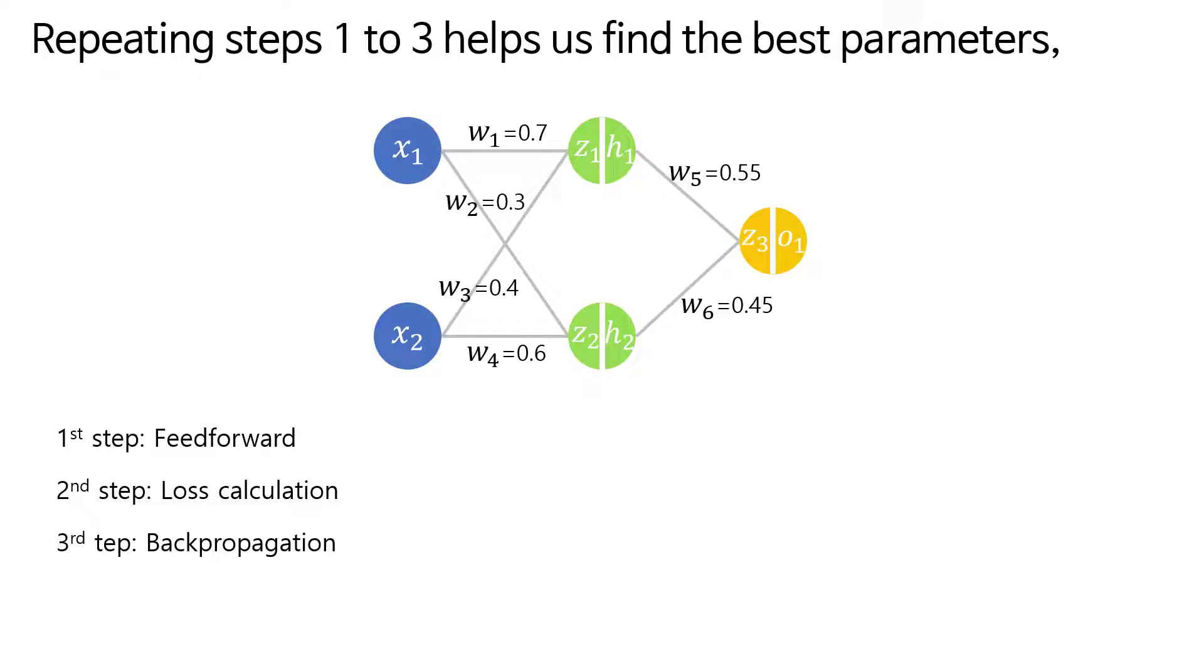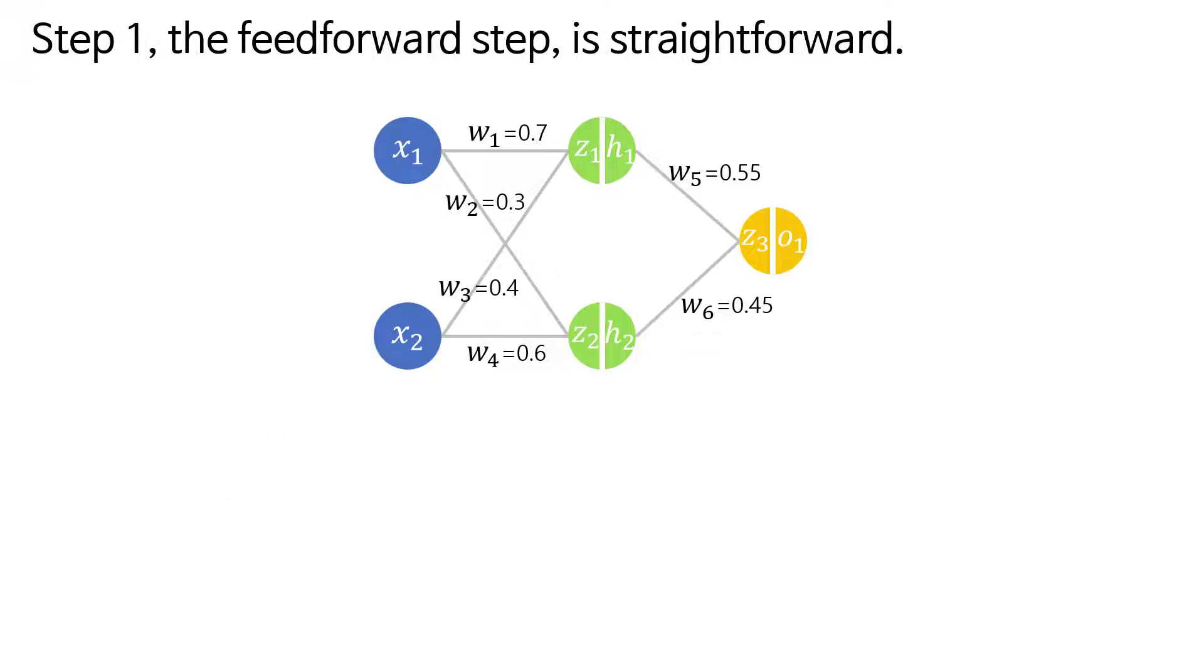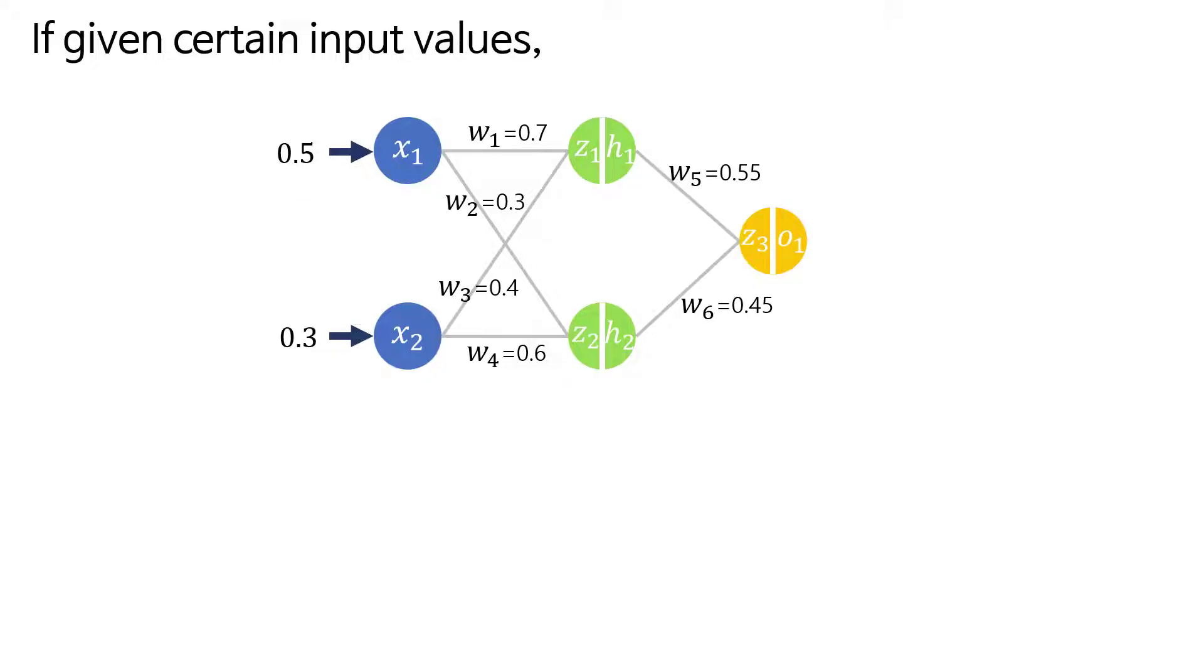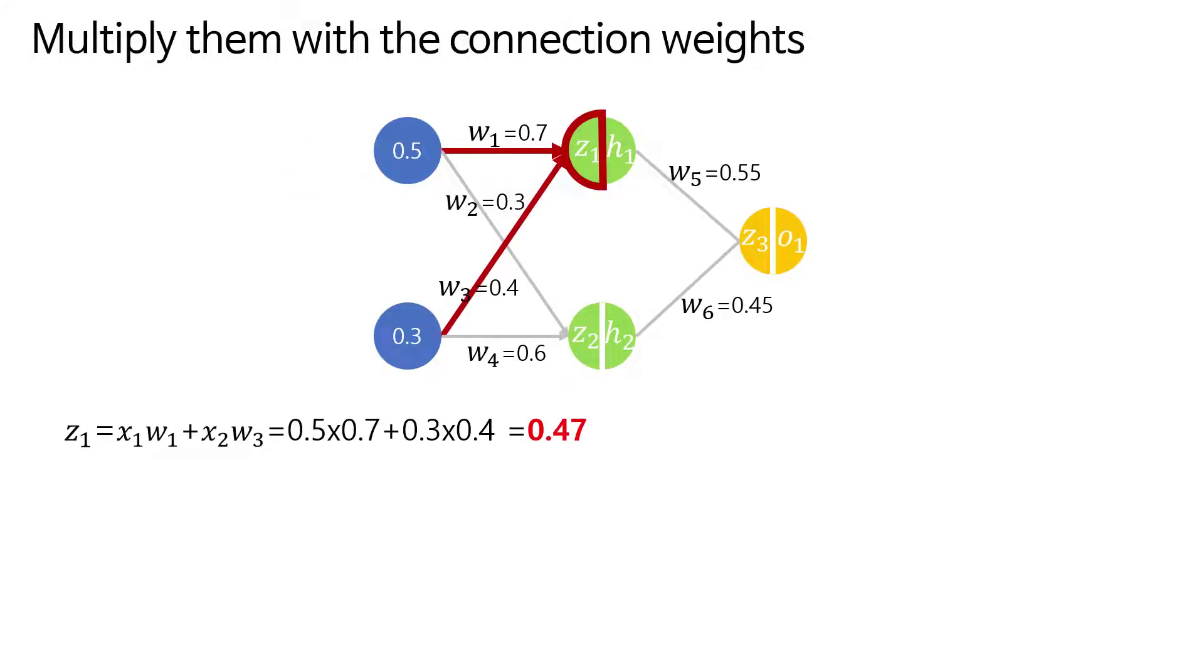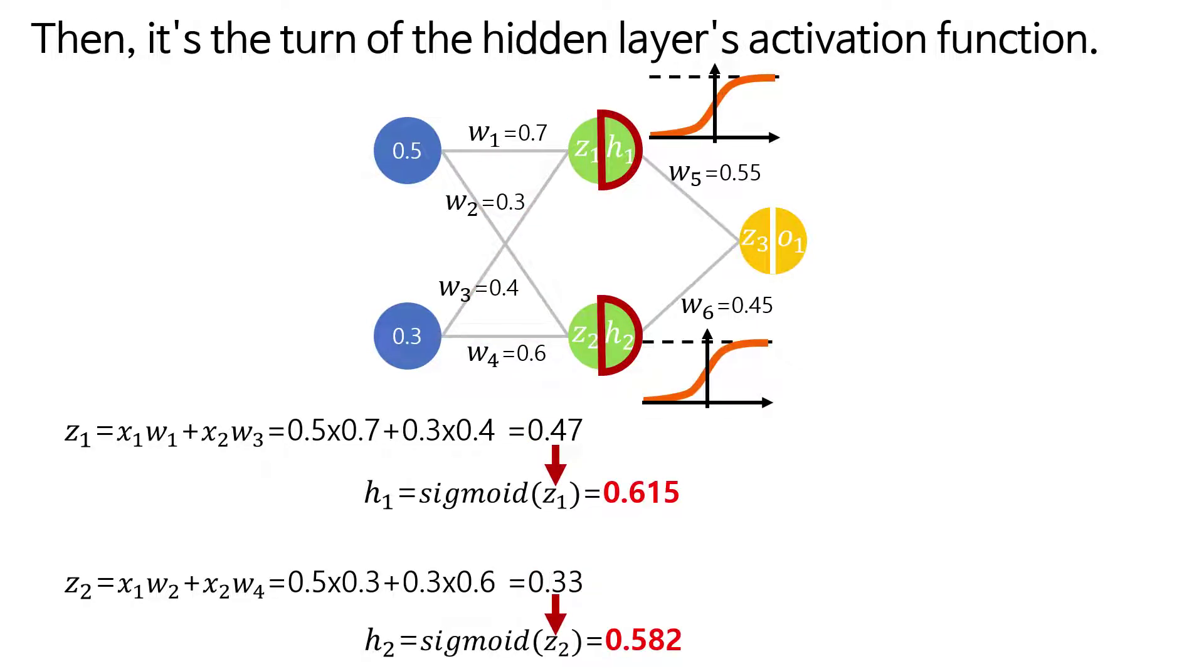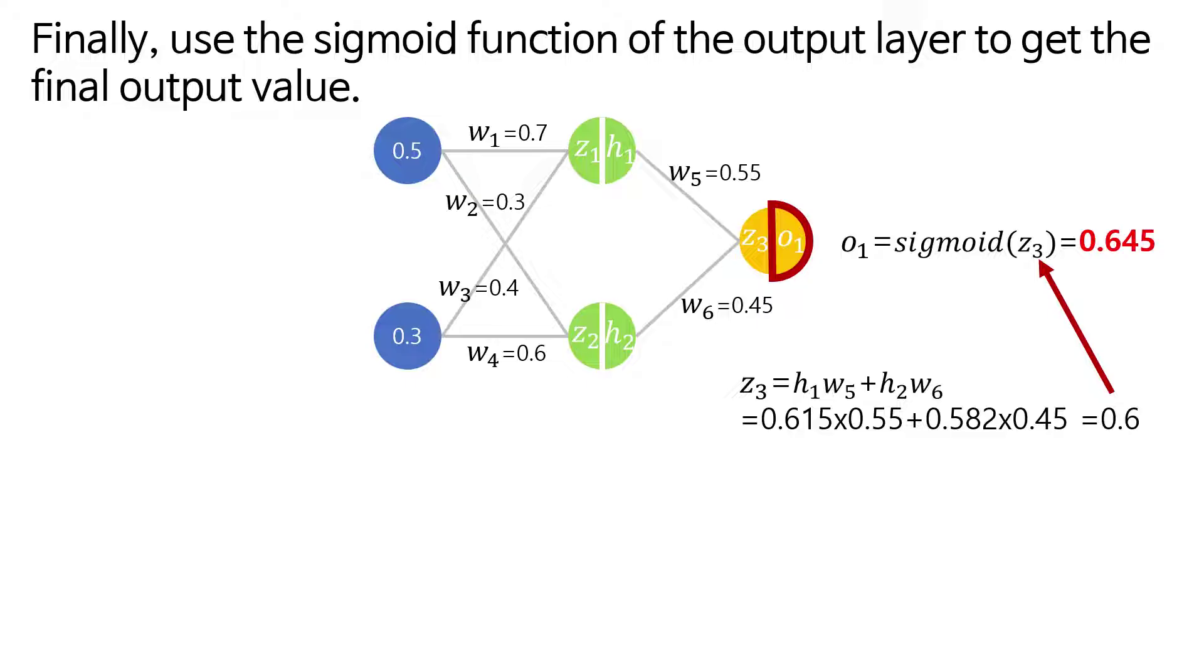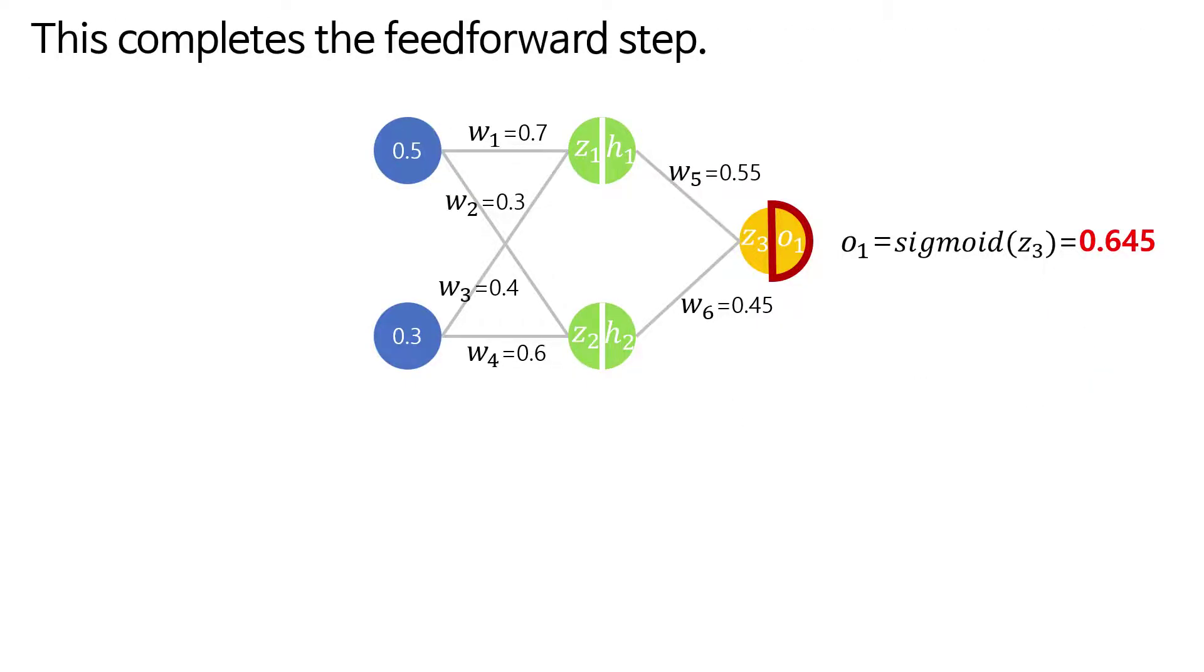Repeating steps one to three helps us find the best parameters. This process is called training or optimization. Step one: the feedforward step is straightforward. If given certain input values, multiply them with the connection weights and sum them to get the hidden layer node values. Then it's the turn of the hidden layer's activation function. Next, multiply these with the connection weights and sum them to get the output layer neuron values. Finally, use the sigmoid function of the output layer to get the final output value. This completes the feedforward step.